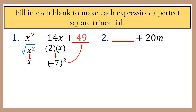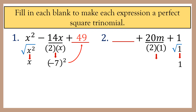Number 2: blank plus 20m plus 1. This time, the missing term is the first term. We get the square root of the last term, which is 1. Then we divide the middle term by twice the square root of the last term: 20m divided by 2 is 10m. Then we square 10m, which is 100m squared. So the perfect square trinomial is 100m squared plus 20m plus 1.